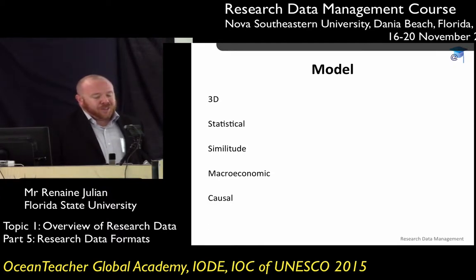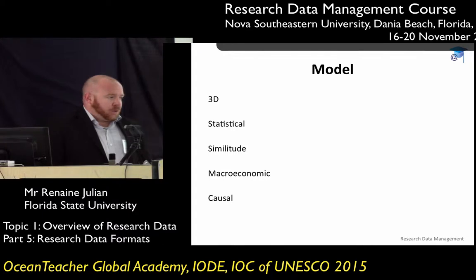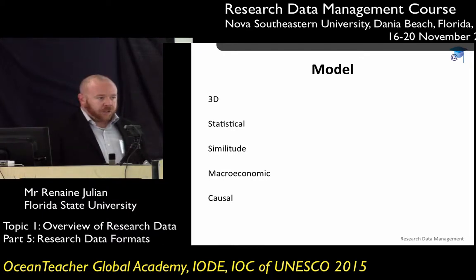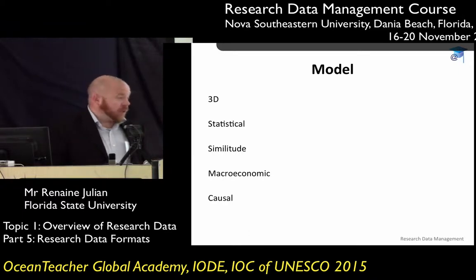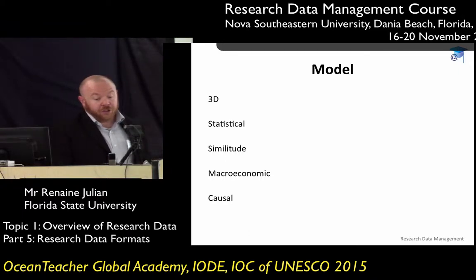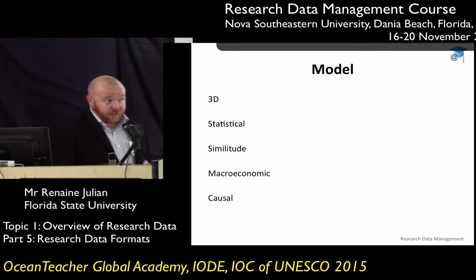But what most of you are used to are statistical models or column models — things that feed in observational or experimental data and spit the information out. So model data is usually information about your model parameters and things like that, as we discussed earlier.